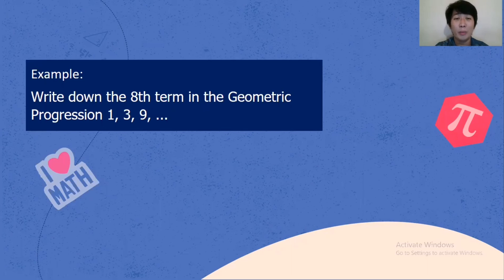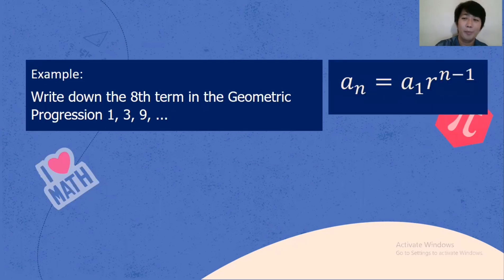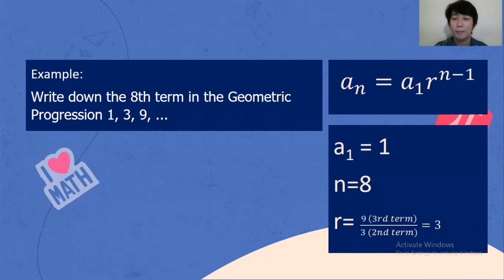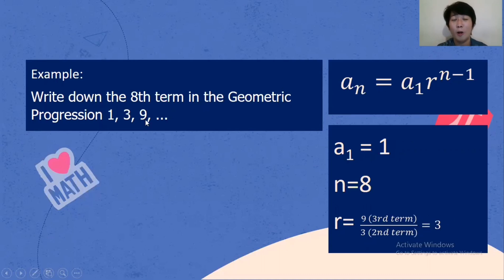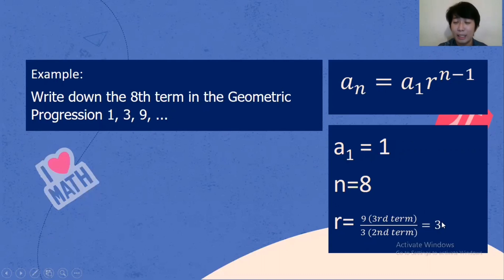Write down the 8th term in the geometric progression 1, 3, 9, and so on. We will be using a sub n equals a sub 1 multiplied by r raised to n minus 1. Given: a sub 1 is 1, n is 8, and r is 3. We find r by dividing any term by the preceding term: 9 divided by 3 is 3, or 3 divided by 1 is 3. That is the common ratio.